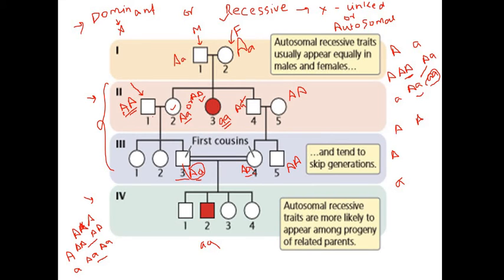Let us now discuss the pedigree chart in detail. In generation 2 and generation 4 we find affected individuals. For generation 1, both parents must be carriers to produce a child with disease phenotype. When both parents are carriers, one out of four children shows the disorder. Since we are considering this a rare recessive disorder, individuals who marry into the family from outside typically have both normal alleles.